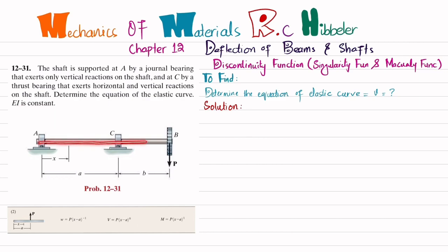You can see this is the shaft AB, supported by a journal bearing at A that only exerts a vertical force, and there is a thrust bearing that exerts horizontal as well as vertical forces. Load P is applied at point B. You have to determine the equation of the elastic curve, which means finding the equation of deflection for this beam.